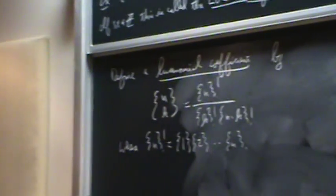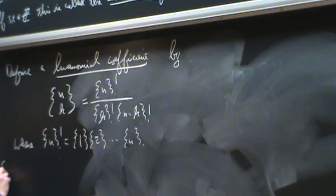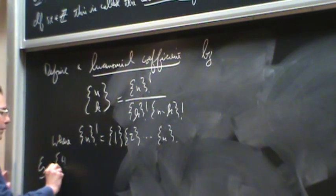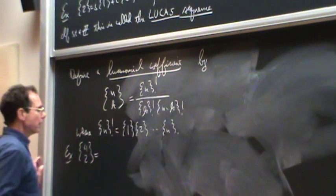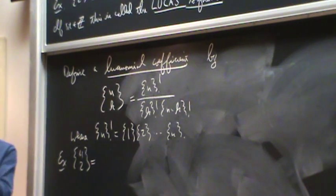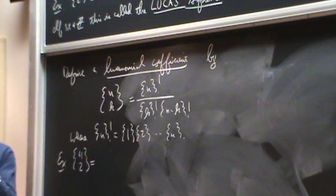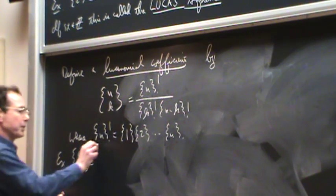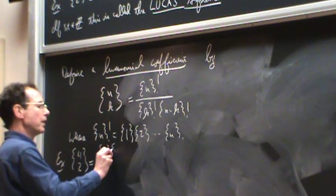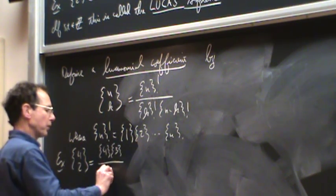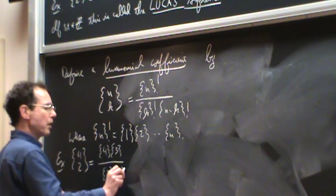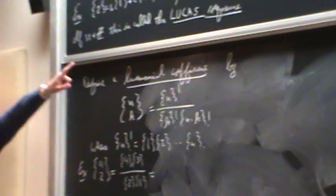So let's calculate one of these again, just to see what we get. So what would curly brackets 4 choose 2 look like? Well, you can obviously cancel factorials with curly brackets, just as you can with normal factorials. So that's going to be curly brackets {4} times curly brackets {3} over curly brackets {2} times curly brackets {1}. And we have all of those on the board, right?